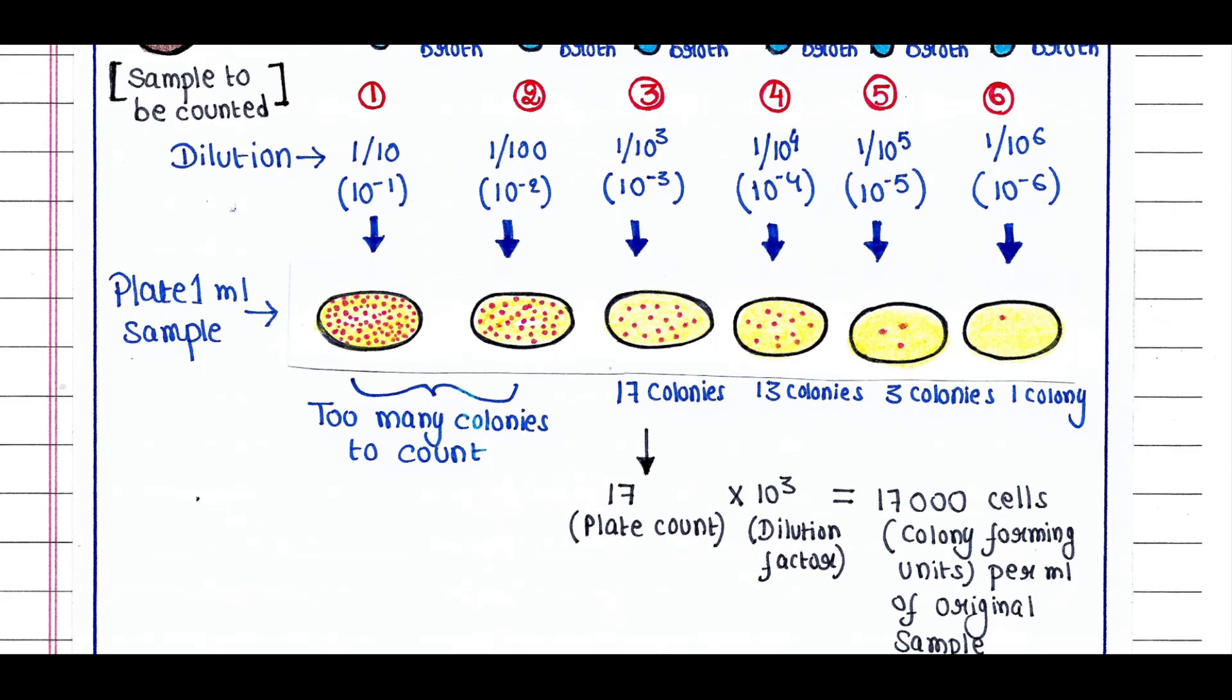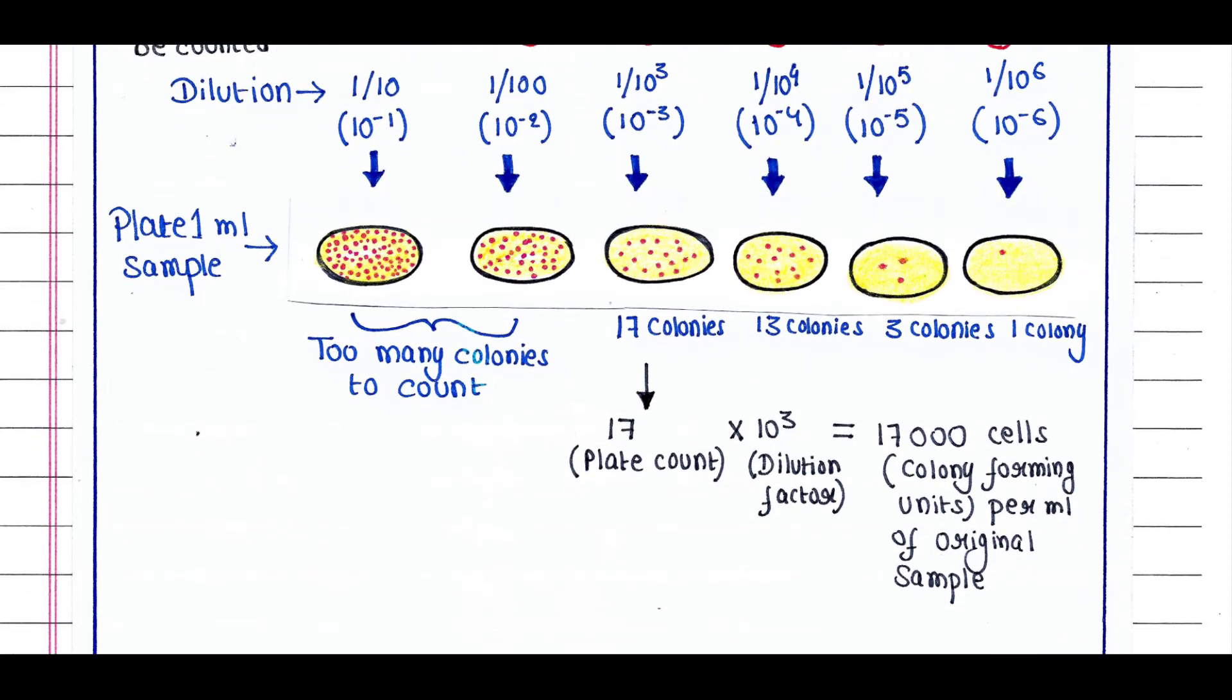Now we can count the cells. If we choose plate 3, we have 17 colonies. The dilution factor is 10 to the power 3, since we diluted the original sample 1000 times. We will multiply 17 by 10 to the power 3, and the answer is 17,000. That means 17,000 bacterial cells are present per ml of original sample. This is called CFU or colony forming units.